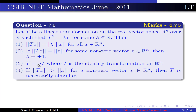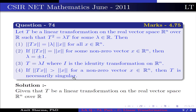Option 3: T = λI, where I is the identity transformation on R^n. Option 4: if ||Tx|| > ||x|| for a nonzero vector x ∈ R^n, then T is necessarily singular.